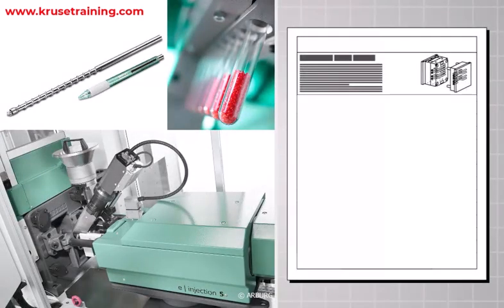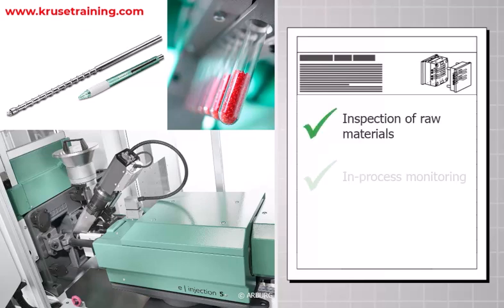Quality Control: Implement rigorous quality control measures throughout the manufacturing process. This includes inspection of the raw materials, in-process monitoring, and final part inspection to ensure consistency and compliance with specifications.